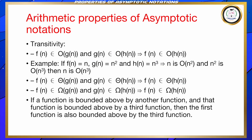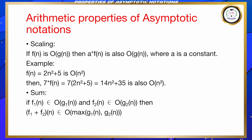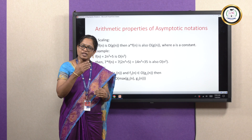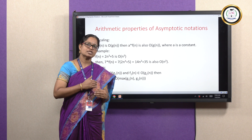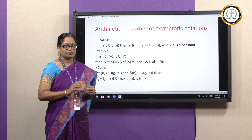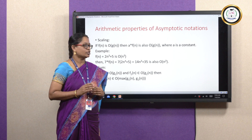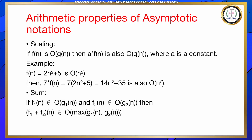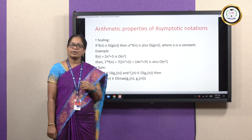This transitivity property is applicable to both theta and omega notations also. The next is the scaling property. This property is defined by: if f(n) is O(g(n)), then a·f(n) is also O(g(n)). If that function is multiplied by a constant factor, the order does not change — it is still O(g(n)). For example, f(n) = 2n² + 5, which is a quadratic equation, so the complexity is O(n²).